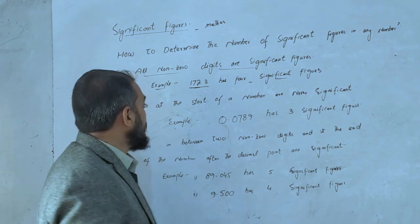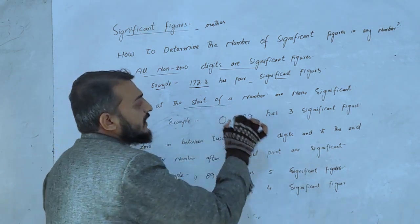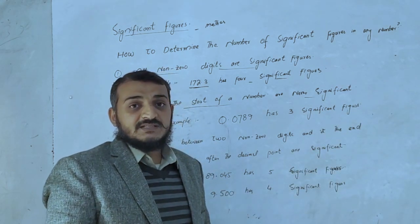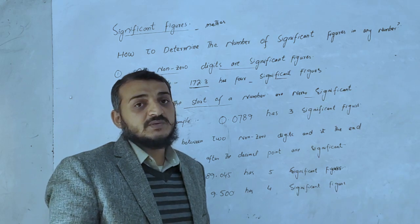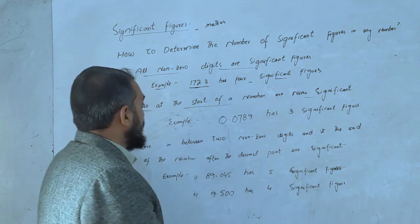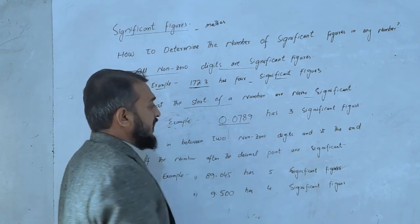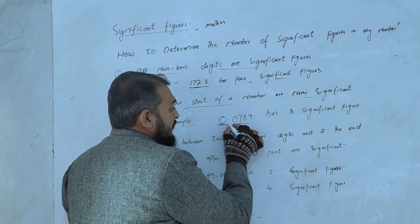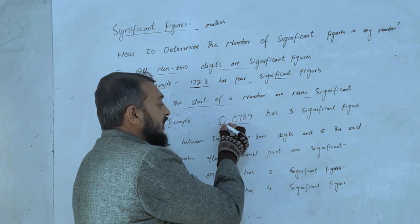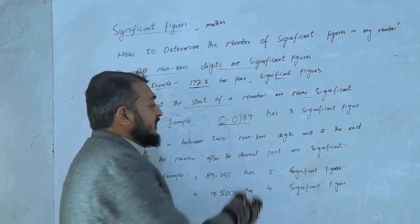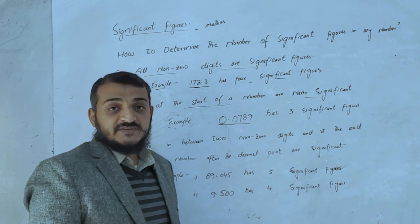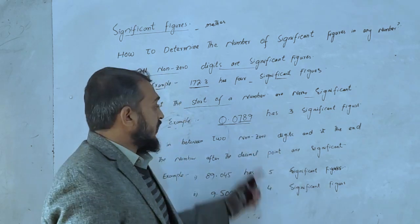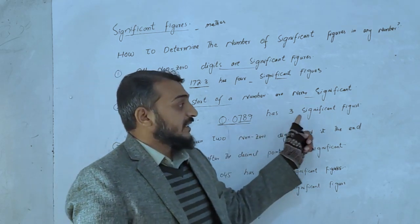Rule number 2: zeros at the start of a number, that is leading zeros, are never significant. For example, 0.0789 — the zeros to the left of the non-zero digits are not significant figures.